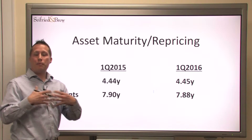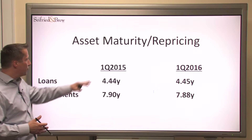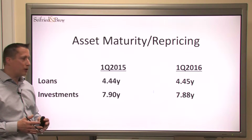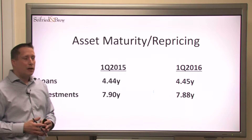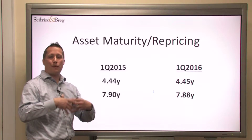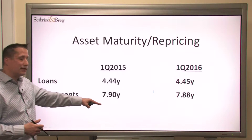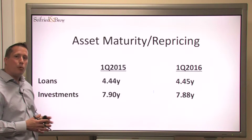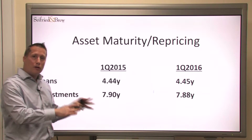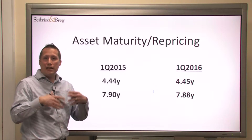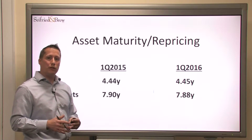Perhaps it's the repricing or maturity structure of our balance sheet. Loans in the first quarter of 2015 were at 4.44 years compared to 4.45 years in the first quarter of 2016 — a slight extension, but not enough to indicate a larger increase in overall yield on earning assets. On the investment side, we actually see a decline from 7.90 years to 7.88 years. So the duration or maturity structure of our balance sheet hasn't changed enough to indicate a meaningful increase in yield on earning assets.